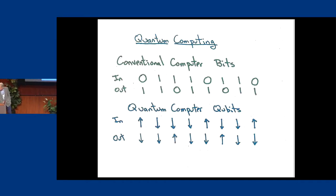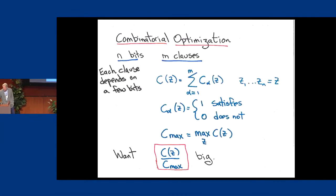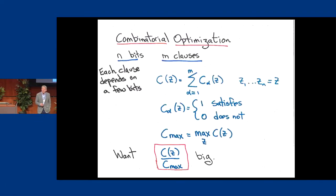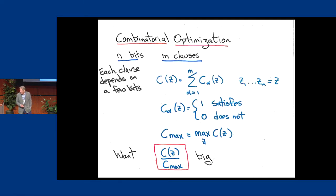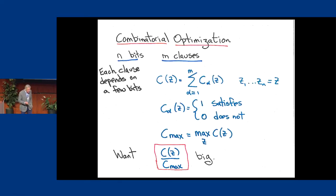I would like to talk about combinatorial optimization. Some of this talk is really a review of the quantum approximate optimization algorithm, which I spoke about here two years ago, but I will get to some newer applications, newer ideas. The problem that I'm interested in is combinatorial optimization.